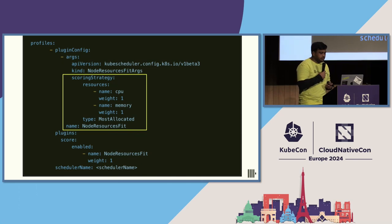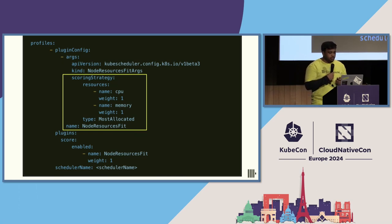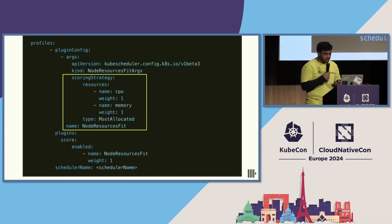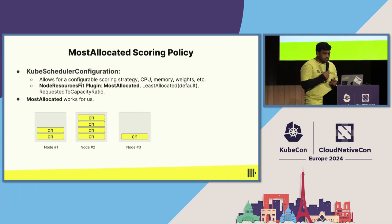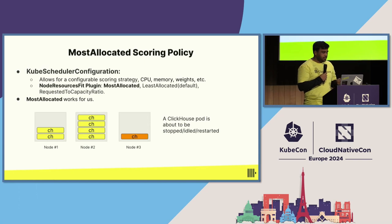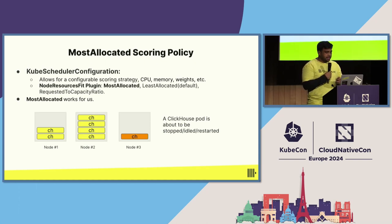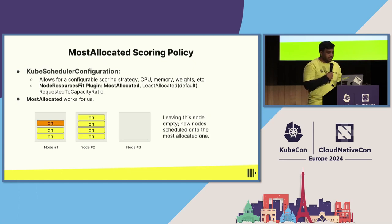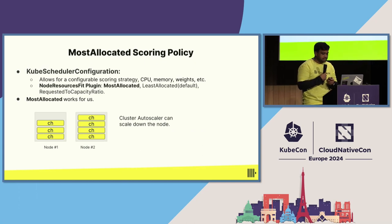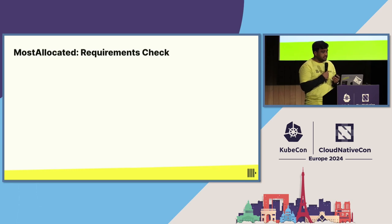This is an example config file for updating the Kubernetes control plane. Inside the plugin config section for the NodeResourcesFit plugin, we update the scoring strategy to use Most Allocated scoring and provide equal weights to CPU and memory, though that can be changed. In a cluster with three nodes, if a pod is restarted due to idling, unidling, or auto-scaling, the Most Allocated policy finds nodes that can fit the pod, picks the one with higher utilization, and schedules there. This means an underutilized node can now be reclaimed by cluster autoscaler, reducing the cluster from three nodes to two.